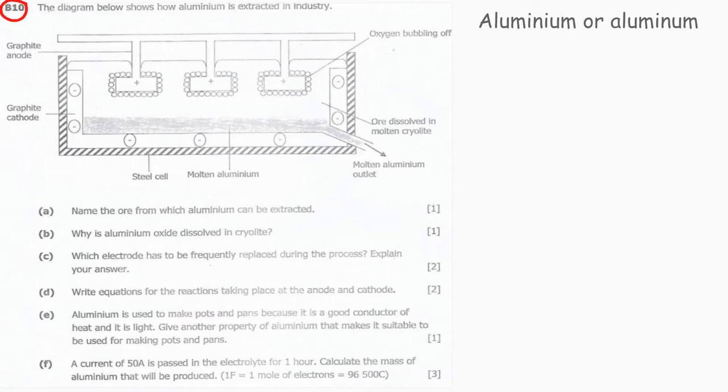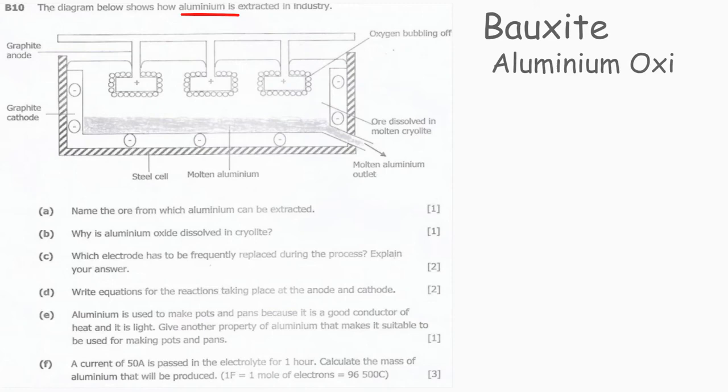Question 10: The diagram below shows how aluminum is extracted in industry. Let's look at the diagram for a bit and study it first. Question A: Name the ore from which aluminum can be extracted. The ore from which aluminum can be extracted is called bauxite, and the chemical name for bauxite is aluminum oxide.